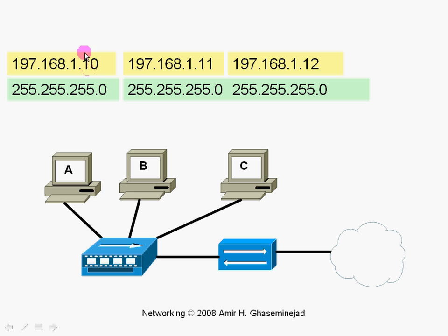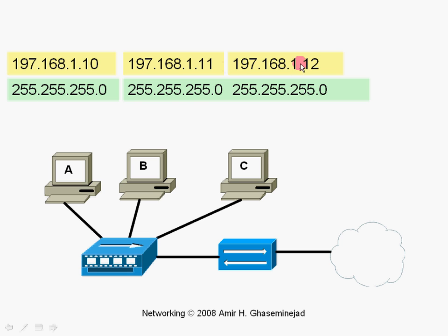Then computer A looks at the destination address 197.168.1, looks at the first three octets of the destination IP address, compares it with the subnet mask, and realizes that the destination address and its own source IP address are in the same subnet.